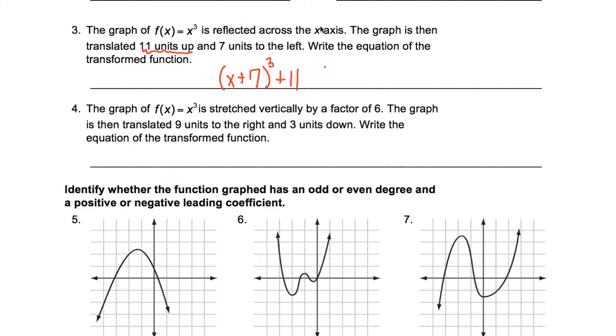To get a reflection across the x-axis, that's where you have something like this and it's reflected down. That's a vertical flip, so you would put a negative on the outside. And that would be your new function. So help do that, or let that help you do number 4.